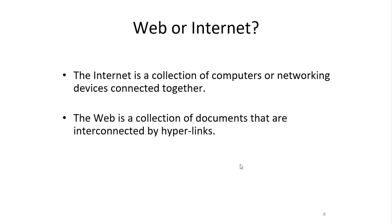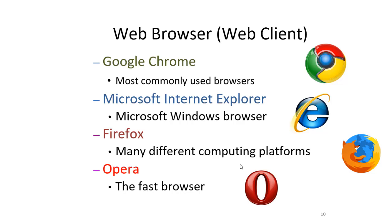The web and the internet are not the same things. The internet is a collection of computers or networking devices connected together, allowing communication between each other, with a decentralized design so no centralized body controls how the internet functions. The web is a collection of documents interconnected by hyperlinks. A web browser is a web client — a program that retrieves information from the web. Examples include Google Chrome, which is the most commonly used browser.